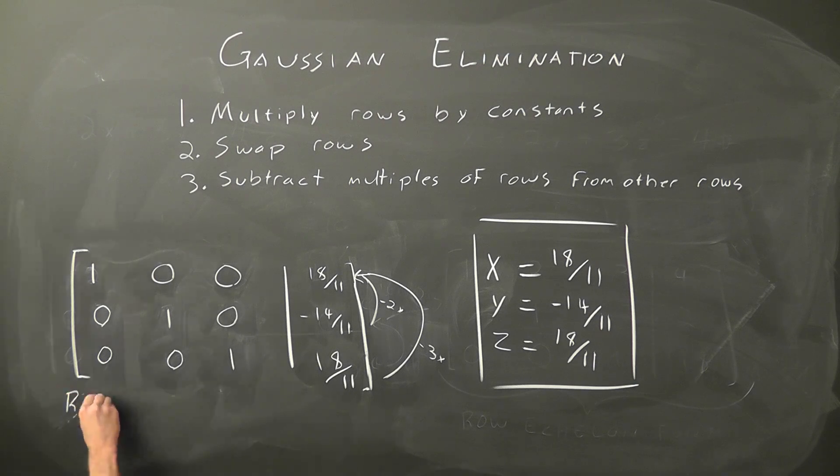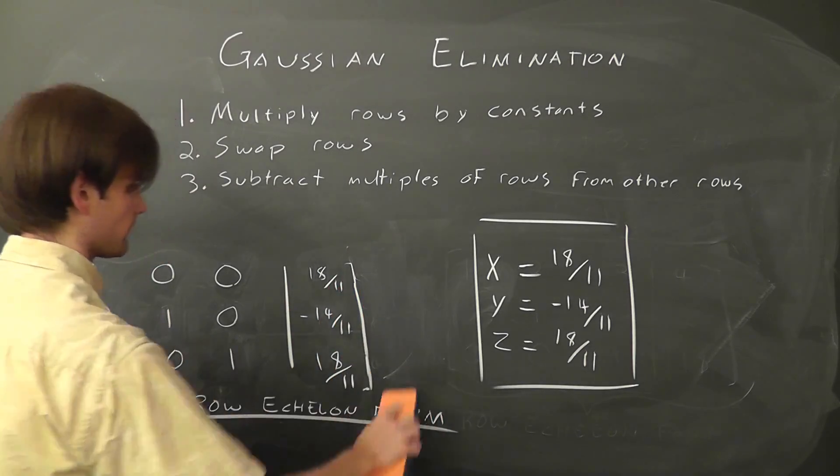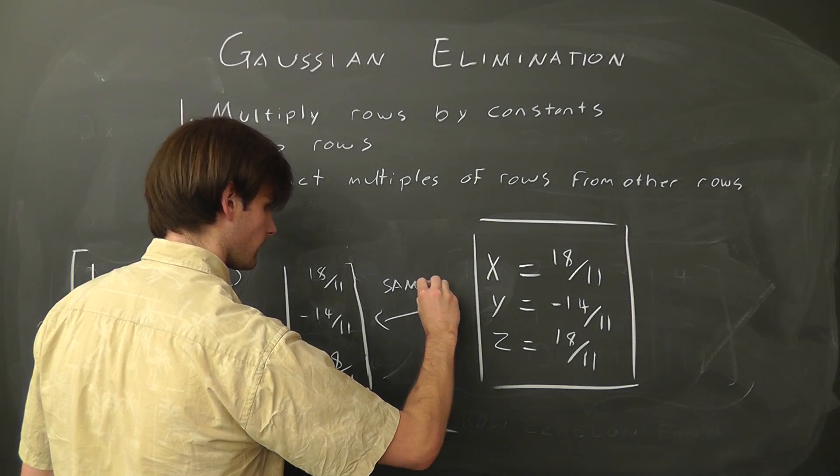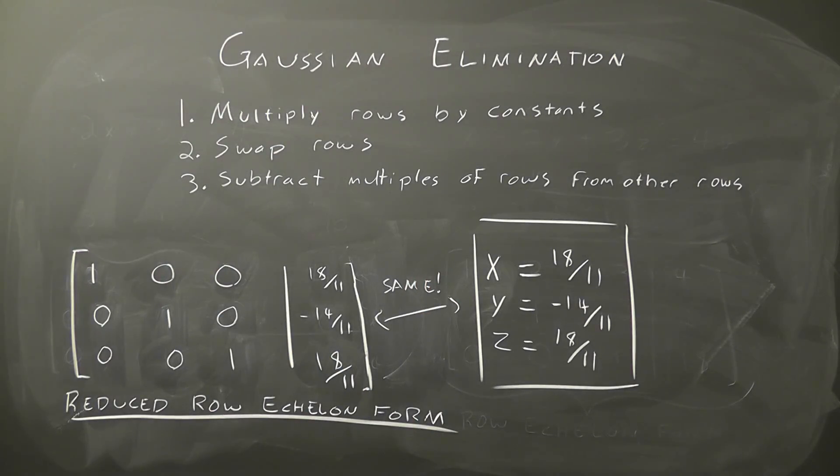This is called reduced row echelon form, and clearly shows that x equals 18 over 11, y equals negative 14 over 11, and z again equals 18 over 11 without any back substitution.